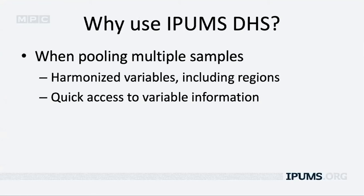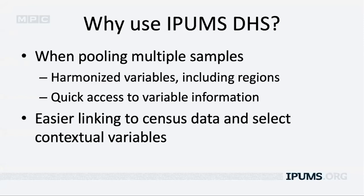In addition, you get quick access to variable information — with a click, you can see question wording from the survey, who was asked the question, and how the question changed over time. IPUMS DHS is also set up so that it's easy to link to census data and IPUMS International, and easy to select certain contextual variables and add them to household or women's records.